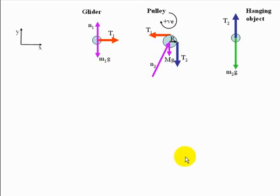We then show the forces acting on each of the three objects. The glider and the mass are moving with uniform acceleration along a straight line. The glider along the x-axis and the mass along the y-axis. The pulley is not moving but is rotating about its center of mass.